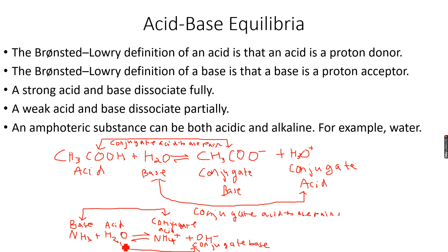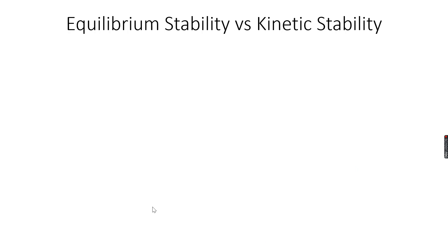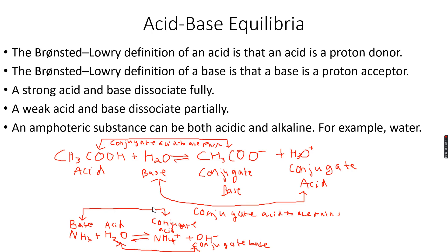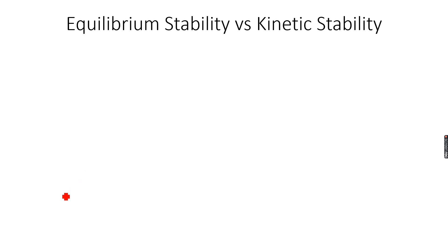So again we have two conjugate acid-base pairs, and we need to know how to figure them out — how to identify what is a conjugate acid-base pair. We will do more on acid-base equilibria in the next playlist, which will be on further aspects of equilibria.